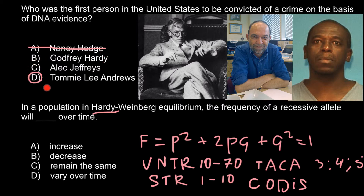With three answers remaining, you should know Godfrey Hardy from his contribution to genetics, which leaves only two names. Even if you don't know who is the scientist and who is the serial rapist, you still have a one-in-two chance of choosing the correct answer by excluding the improbable options — or if you already know the names and contributions of those people. Now we can move to the second question.